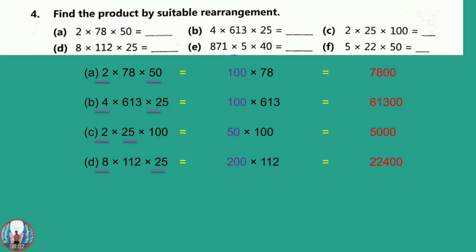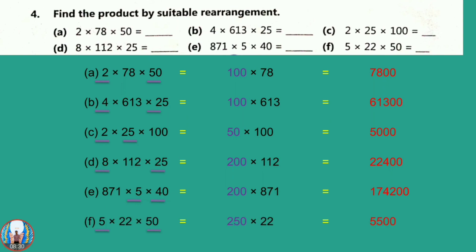Question number D: 8 into 112 into 25. First 25 into 8 is 200. Now 112 into 2 is 224, so 112 into 200 is 22,400. Question number E: 871 into 5 into 40. We will multiply 40 into 5, that is 200. Then 200 into 871 is 1,74,200.